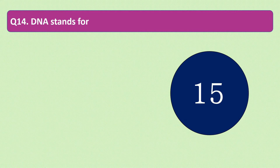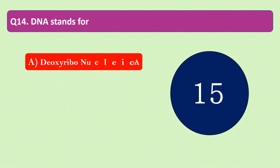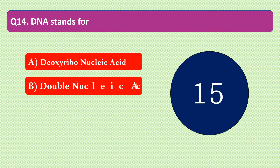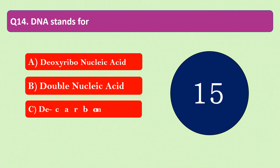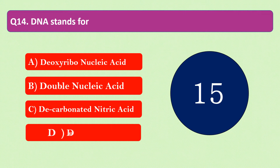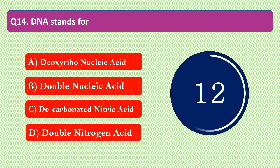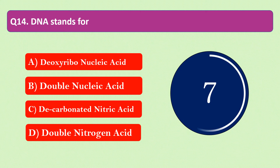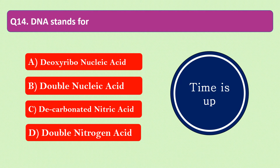Question number 14: DNA stands for dash. The options are A. Deoxyribonucleic acid, B. Double nucleic acid, C. Decarbonated nitric acid, or D. Double nitrogen acid. Your time starts now. Your time is up and the right answer is option A: Deoxyribonucleic acid. DNA stands for deoxyribonucleic acid.